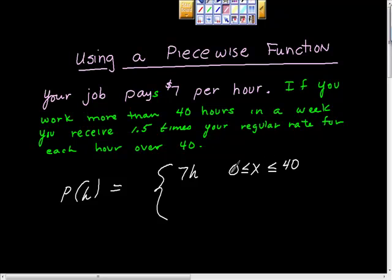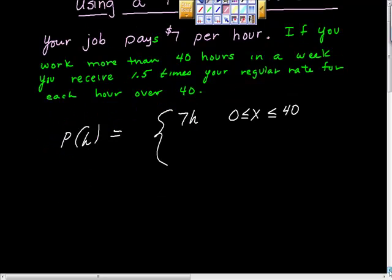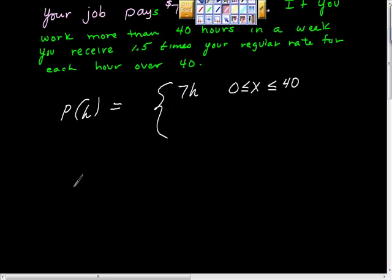So if you work somewhere between zero hours and 40 hours, you get seven times that amount. But you get more than that if you work more than 40 hours. What would that look like? Well, you'd get paid $7 for the first 40 hours, plus you'd get paid 1.5 times $7 for every hour over 40. So we'd say, what's h minus 40?